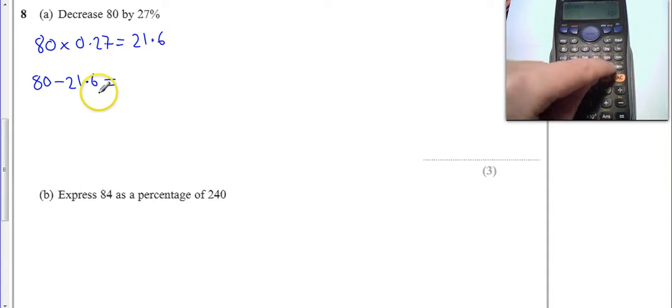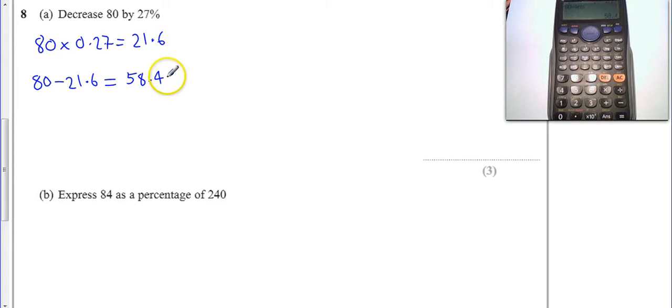I'm going to use the answer button because it remembers it. It's a smart thing to do, and it gives me 58.4. Okay, now there is an alternative way, so I'm just going to put the answer 58.4 in. There is an alternative way of doing it.